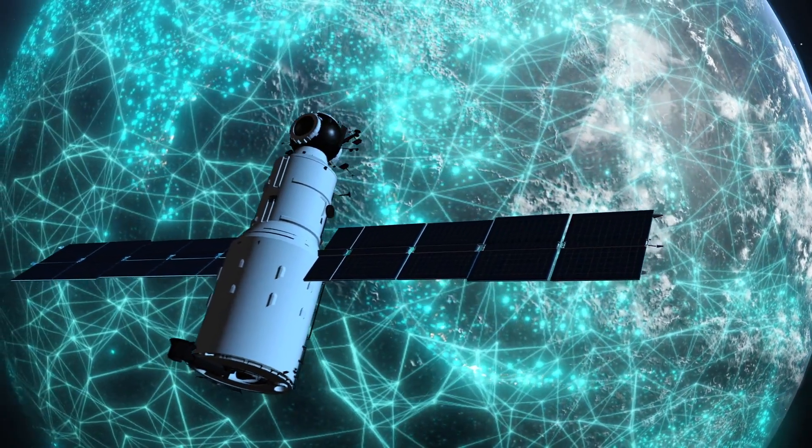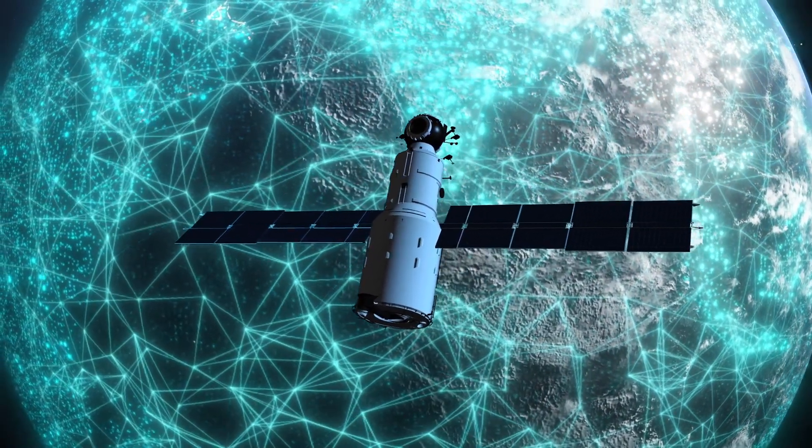You can have direct phone call with someone anywhere in the world because you have a constellation, so you don't need to go through cell towers. You have a cell tower flying over you.